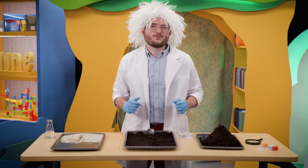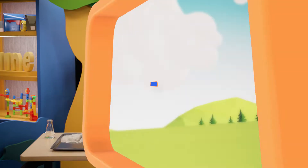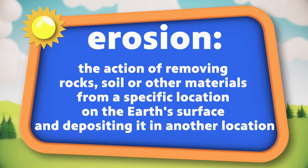What is erosion? It is the action of removing rocks, soil, or other materials from a specific location on the Earth's surface and depositing it in another location.